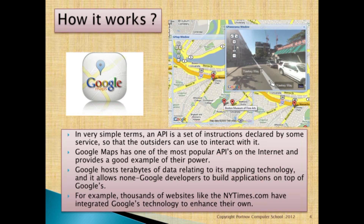How does it work? In very simple terms, an API is a set of instructions declared by some service so that outsiders can use it to interact with it. Google Maps has one of the most popular APIs on the internet and provides a good example of their power.